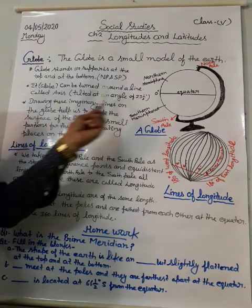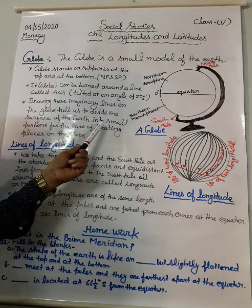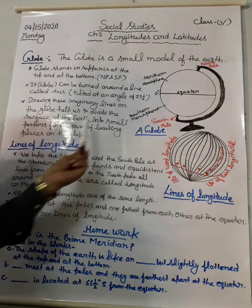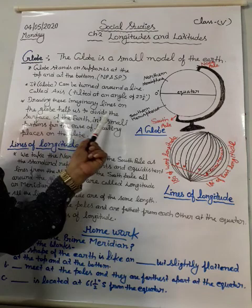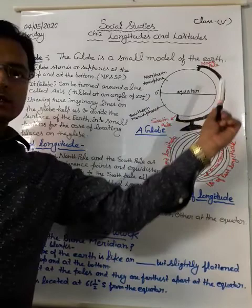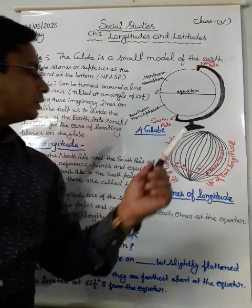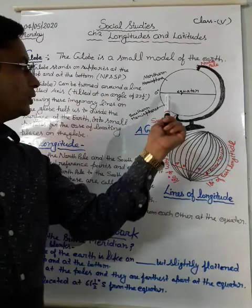Drawing imaginary lines on the globe helps us to divide the surface of the earth into small portions for the ease of locating places on the globe. We suppose many lines on the globe — on the earth — and by making the globe we can divide the earth's surface into small portions for our study.